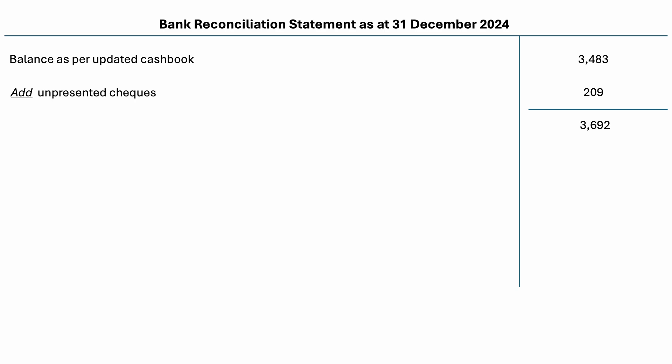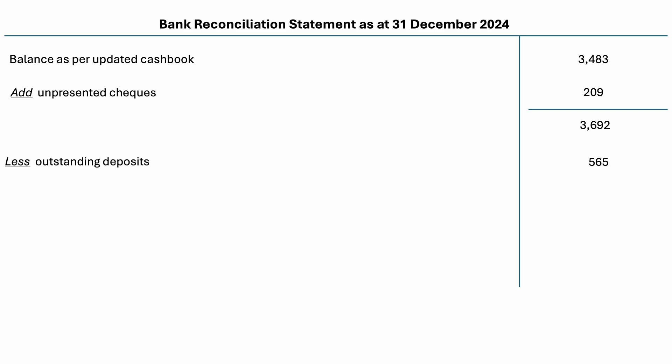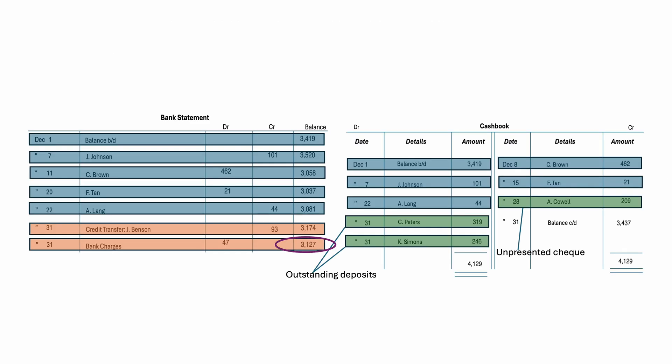The next step is to subtract outstanding deposits. Based on our cash book, the total outstanding deposits are $319 plus $246, which gives $565. In the bank reconciliation statement, the outstanding deposits are subtracted because if these transactions were entered into the bank statement, they would be entered on the credit column and would reduce the balance. After subtraction, we get the balance as per the bank statement, which matches the balance shown on the bank statement. And that's it for this tutorial.